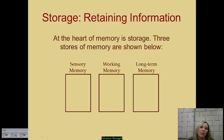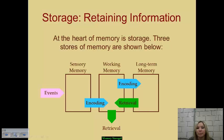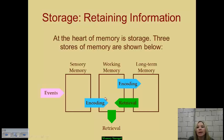There are three stores of memory shown in this organizer: sensory memory, working memory — also referred to as short-term memory — and long-term memory. An event or piece of information is first presented to sensory memory; if perceived as important, it makes it through to working memory and short-term memory, and then it's encoded even further into our long-term memory because we perceive it to have significance.